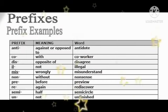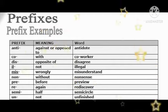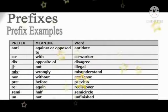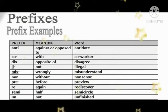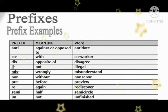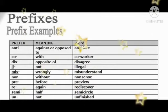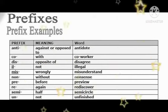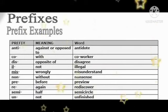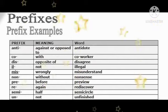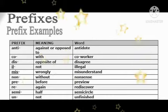Let me give you more examples of prefix. Our first word is antidote — we add the prefix 'anti' to the word, meaning against or opposed to. Next, we add 'co' to worker, making co-worker, which means with. Next, adding prefix 'dis' to agree gives disagree, meaning opposite of. Adding 'ill' to legal gives illegal, meaning not. Adding 'mis' to understand gives misunderstand, meaning wrongly. There are many more examples given here — you can go through them.